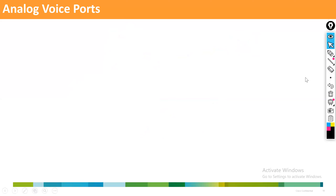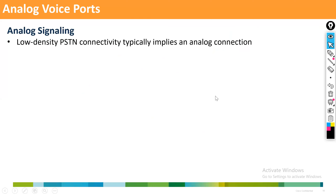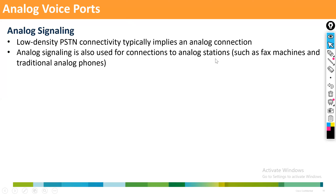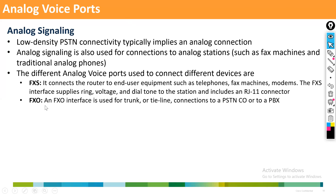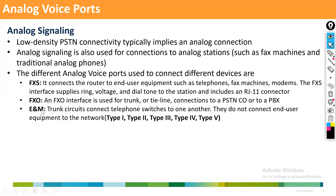Analog signaling is used for low density PSTN connectivity and for connecting to analog stations such as fax machines and traditional analog phones. FXS — Foreign Exchange Station — is used to connect end devices like analog phones, fax machines, and modems, using an RJ11 connection. FXO — Foreign Exchange Office — is used to connect as a trunk from the gateway to PSTN.